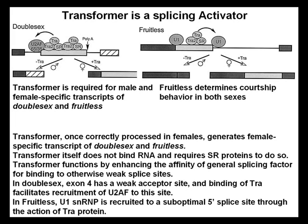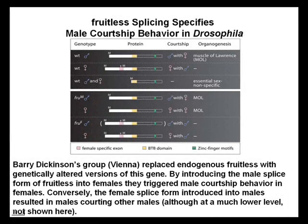Transformer is a splicing activator required for male and female-specific transcripts of double sex and fruitless. Fruitless determines courtship behavior in both sexes. Transformer, once correctly processed in females, generates female-specific transcripts of double sex and fruitless. Transformer itself does not bind RNA and requires SR proteins to do so. It functions by enhancing the affinity of general splicing factors for otherwise weak splice sites. In double sex, exon 4 is a weak acceptor site and binding of transformer facilitates recruitment of U2AF to this site. In fruitless, U1 snRNP is recruited to a suboptimal 5' splice site through the action of transformer.